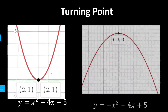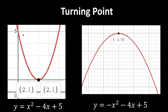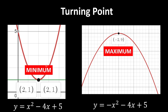For a quadratic curve, we have either a minimum point or a maximum point. So remember, there are two kinds of turning points — either a minimum or a maximum. We now need to figure out how to prove which one a given turning point is.